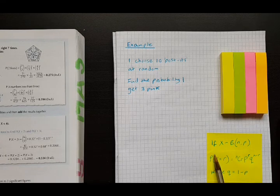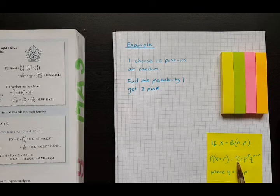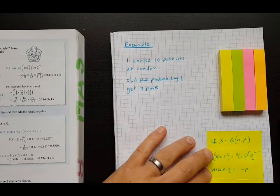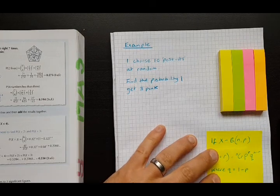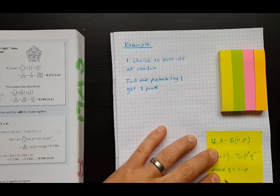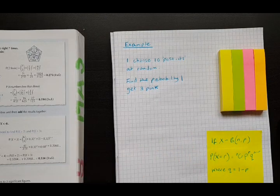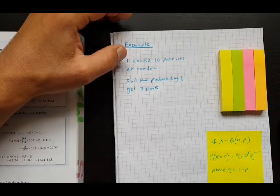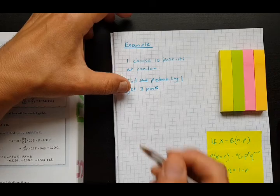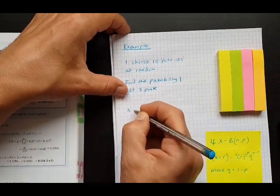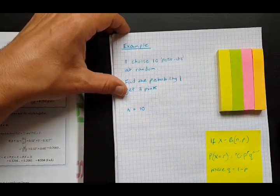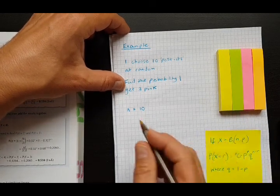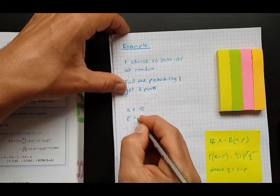So for the amount of successes, this is what we can use. Hopefully this is just a bit of a reminder. Say for example here, we want to work out the probability that we get three pink. Let's think about what the values of these letters are then. We're doing 10 trials here, so n is 10. The probability of success, the probability that I get pink, is one quarter.